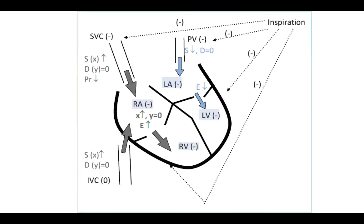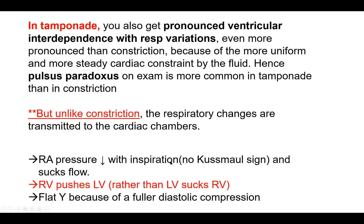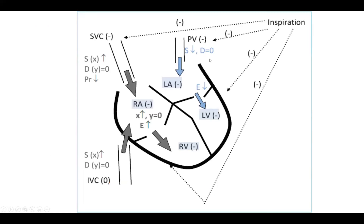Tamponade has very similar hemodynamics to constriction with slight differences. In tamponade, all four chambers are constrained by the pericardium — actually more constrained than in constrictive pericarditis because you have more uniform compression by the fluid. So you actually get more ventricular interdependence and more respiratory variation in flow in tamponade.